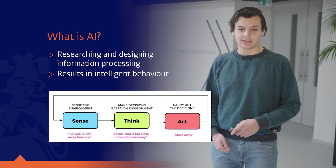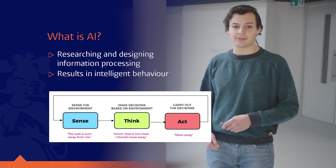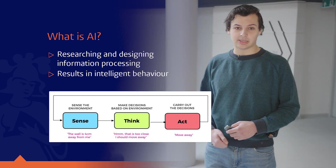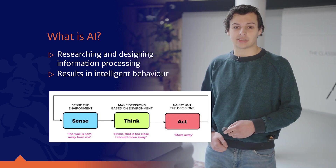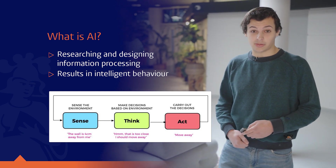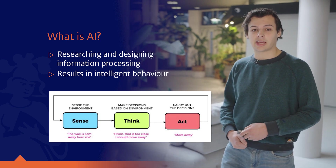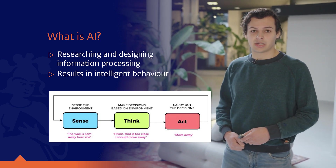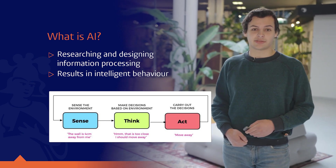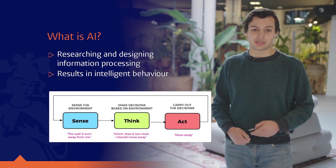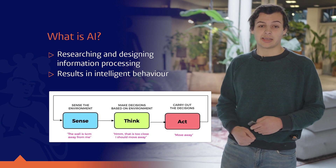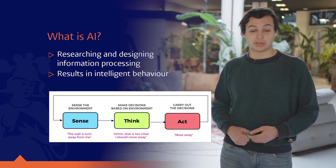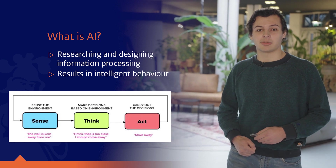So what is AI? AI, or artificial intelligence, is about researching and designing information processing. This means that we try to extract data or other important information from a larger data set. By doing this correctly or with sense we should end up with intelligent behavior. A common way to do this is a sense-think-act cycle where in the first step you sense the environment, then you think about the environment, and in the end you will perform an action which should maybe change the environment again.